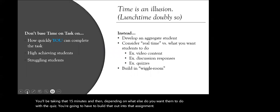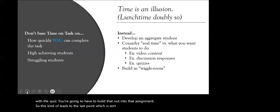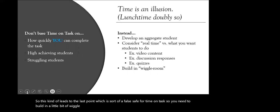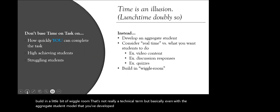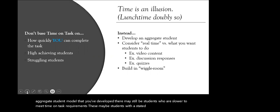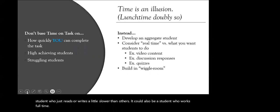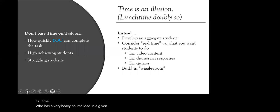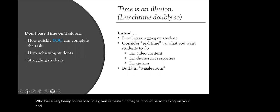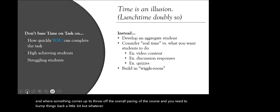This leads to the last point: you need to build in a little bit of wiggle room. Even with the aggregate student model you've developed, there may still be students who are slower to meet time on task requirements — students with a stated disability, students who read or write a little slower, students who work full time or have a very heavy course load, or maybe something on your end comes up to throw off the overall pacing. You don't want to schedule your course down to the last second, because then you won't have any flexibility to adjust.